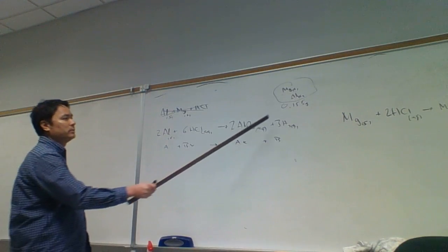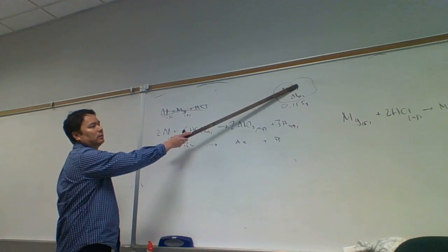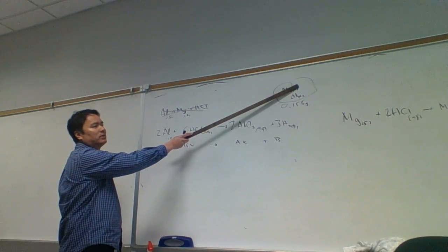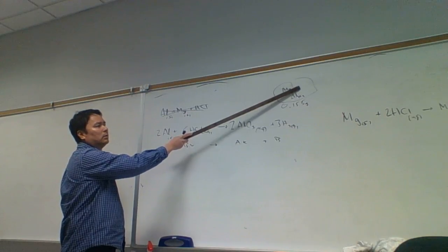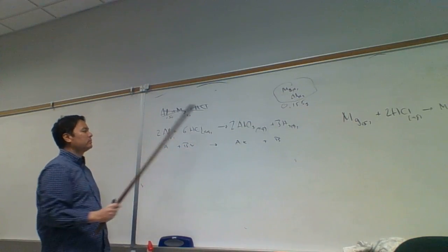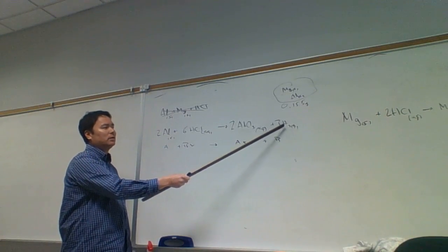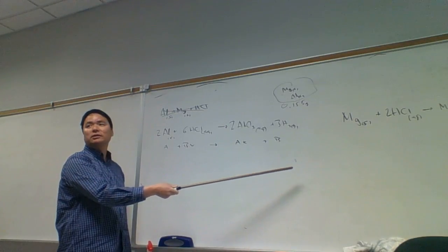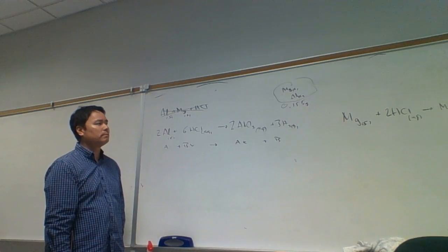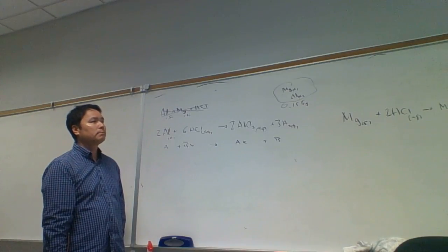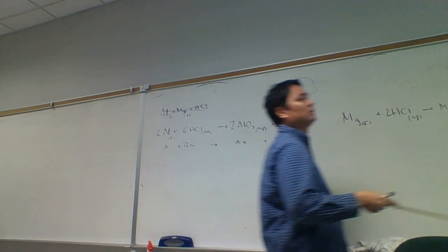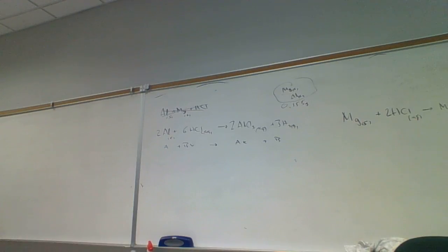So how many grams would that be? 0.155 grams of aluminum. If we go 0.155 grams of aluminum to moles of aluminum, moles of aluminum to moles of hydrogen, and then moles of hydrogen to grams of hydrogen, we figure out how many grams of hydrogen we get. If it matches the measured amount, then it's 100% aluminum because if there's magnesium in there, we get a different amount of hydrogen.